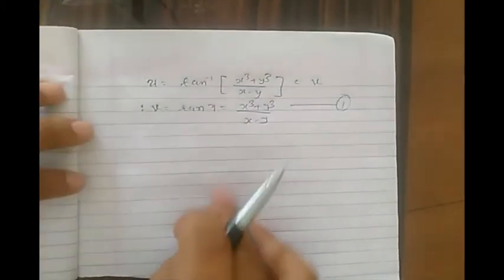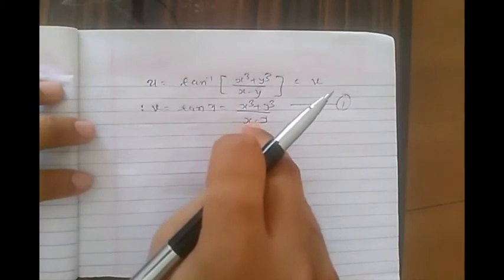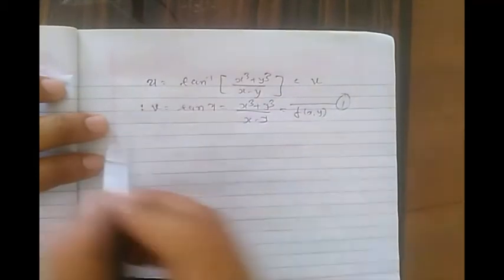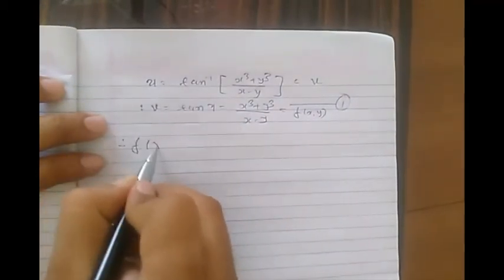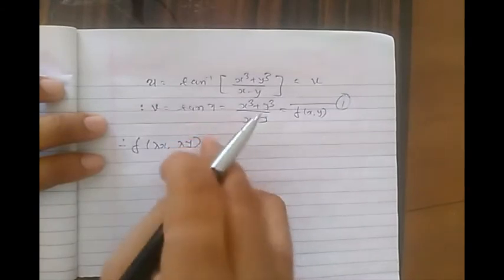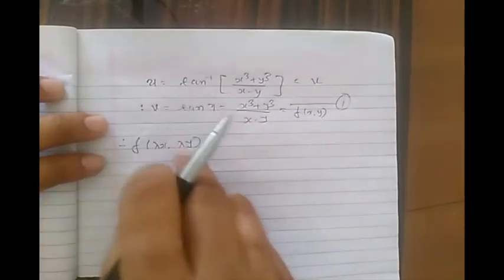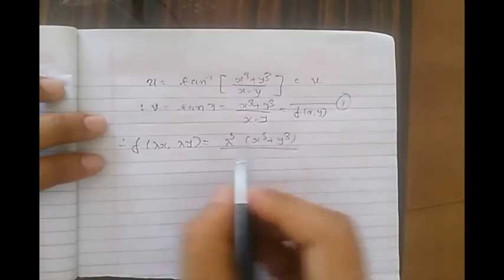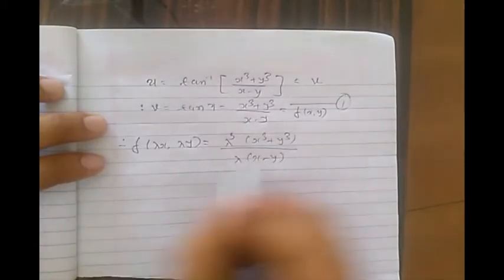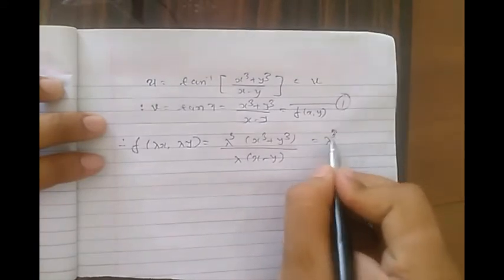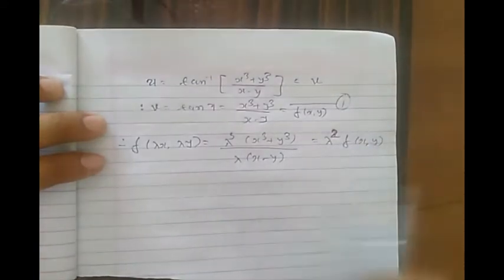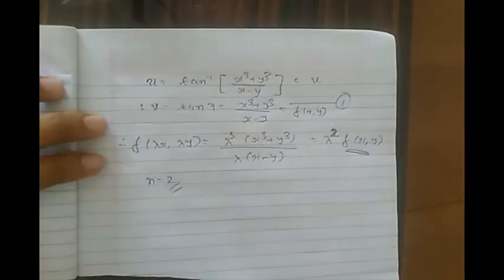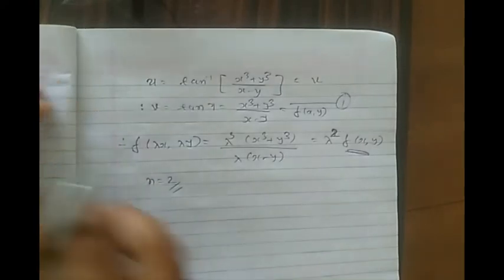Now we prove whether v is a homogeneous function. Taking f(λx, λy): the numerator gives λ³(x³ + y³) and the denominator gives λ(x − y), so we get λ² · f(x, y). Hence the given function is homogeneous of degree n = 2.